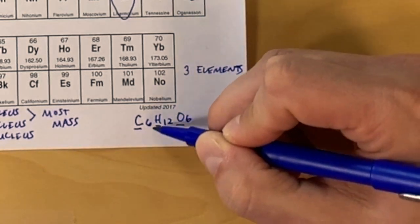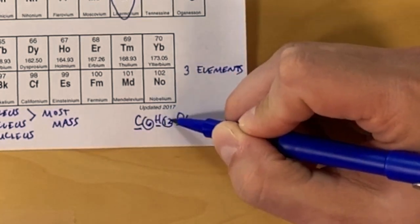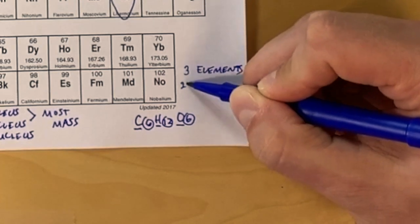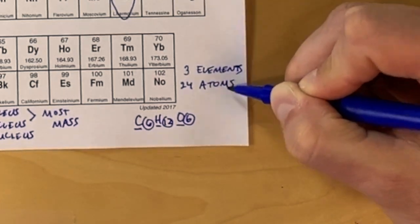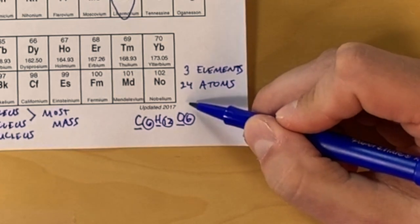You can also figure out, looking at this compound, the number of atoms. So we're going to circle the subscripts, add them all up, and you'll find out that there are 24 atoms in this particular compound.